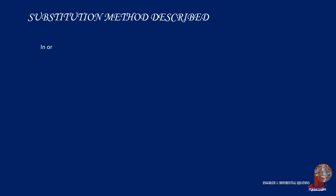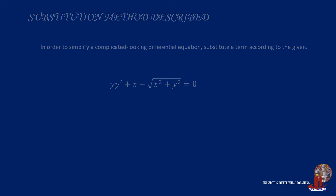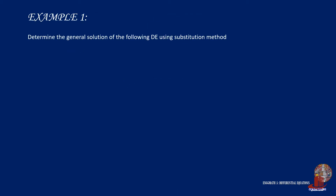Substitution suggested by the equation is a visually analytical method such as integrating factor by inspection. The goal is to simplify the equation into something which can be easily classified, and simplification is through substituting a variable upon one or more in the original function. Let's work on some examples to understand the concept better.